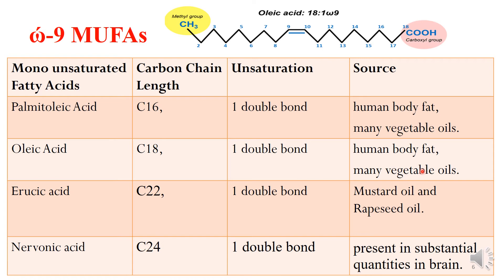Oleic acid is the most common MUFA example. Erucic acid is a 22-carbon chain length MUFA with one double bond, found in high concentrations in mustard oil and rapeseed oil. Nervonic acid has a 24-carbon chain length with one double bond, and it is present in substantial quantities in the brain.